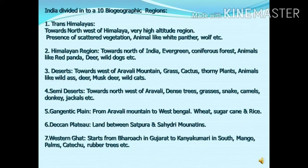The second biogeographic region is the Himalayan region, towards the north of India. Evergreen coniferous forests are available here. Animals like the red panda, deer, and wild dogs occur there. This Himalayan region is also a high-altitude region, and on the basis of altitude or height, three zones are made: the low-altitude zone, the moderate-altitude zone, and the high-altitude zone.